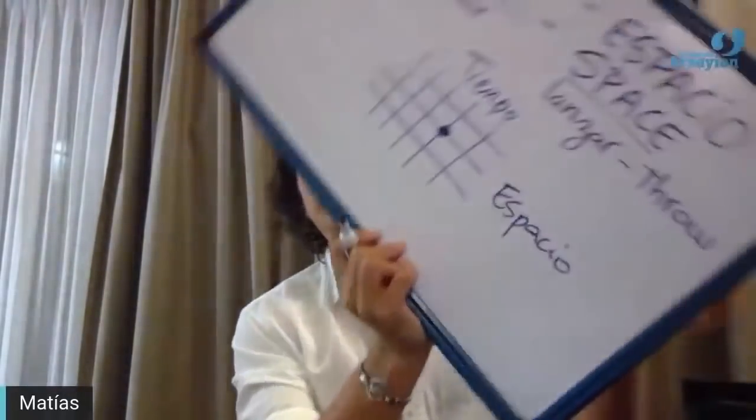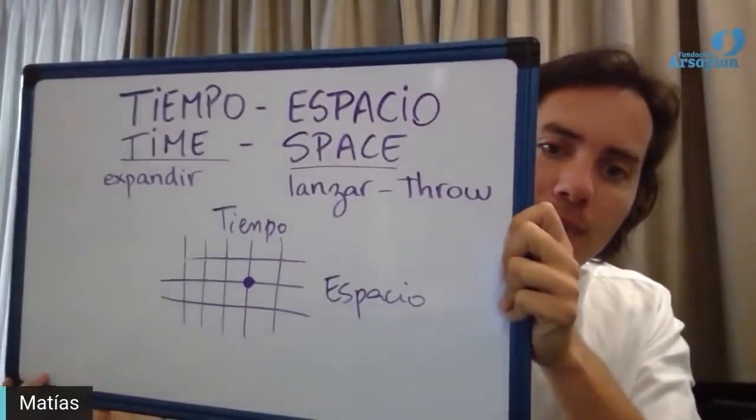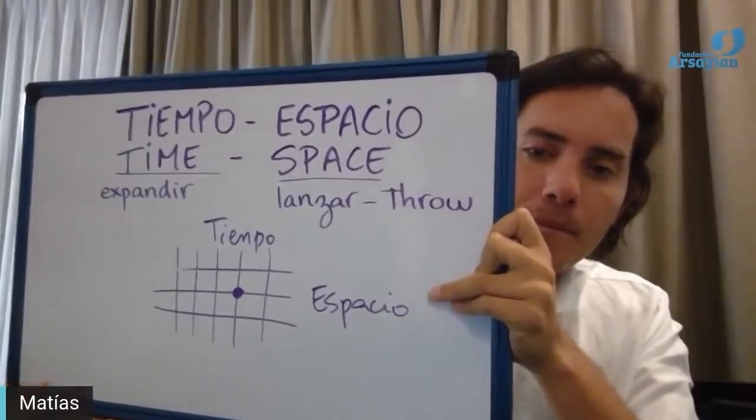We have spoken about the network between time and space. An important thing to understand here: time and space are not places through which things move — time and space are the constants of matter. This means that without matter, there is no time and no space. So time and space don't exist in the mind of the universe; they only exist in the manifestation of that mind.